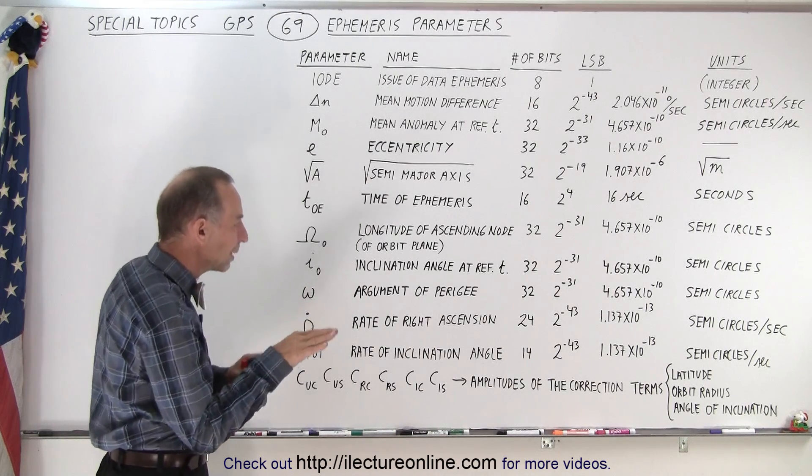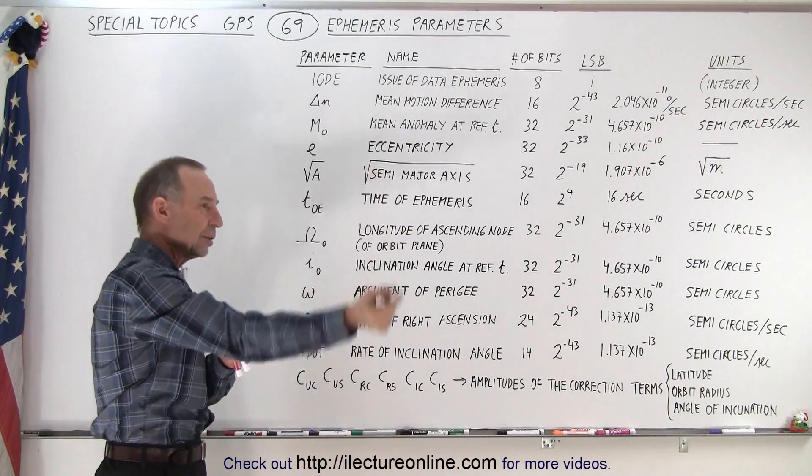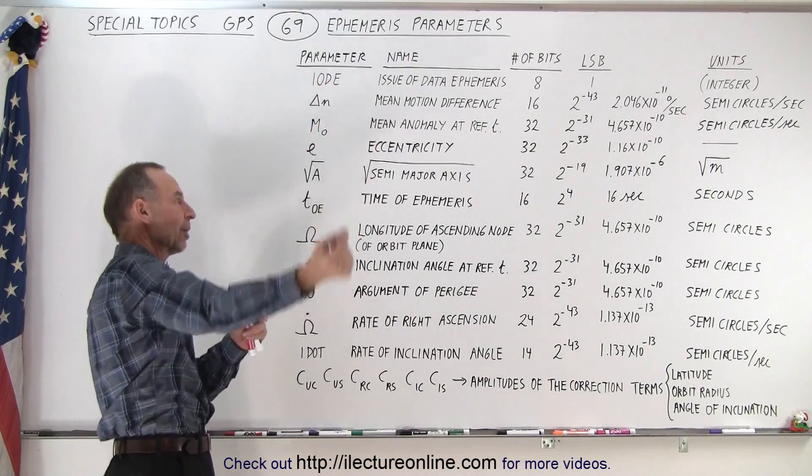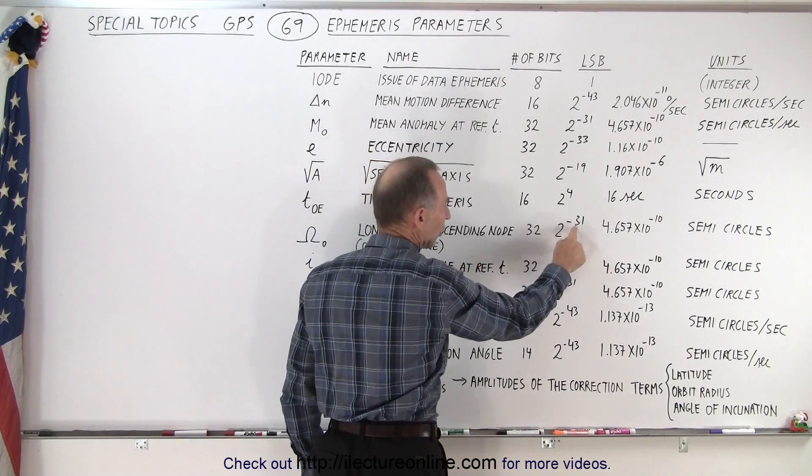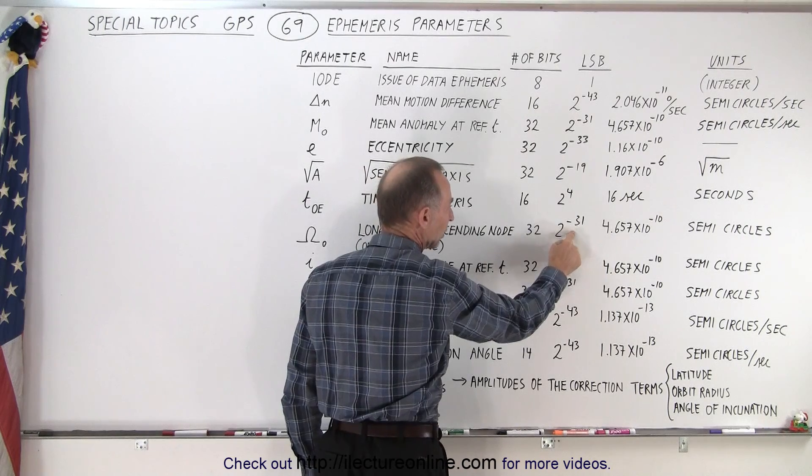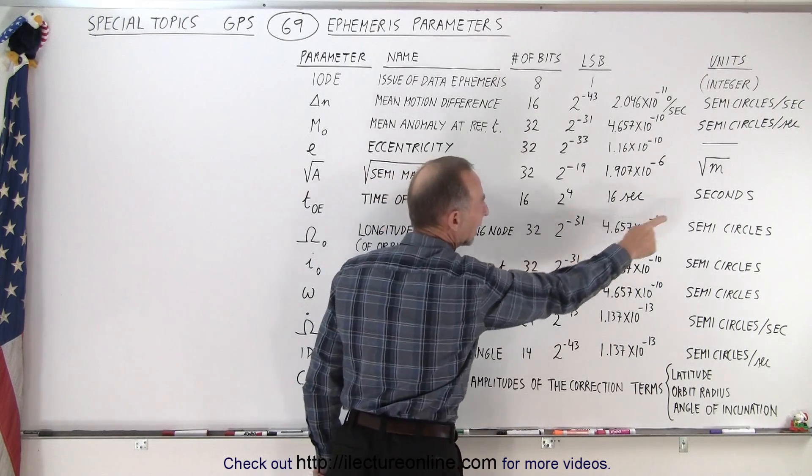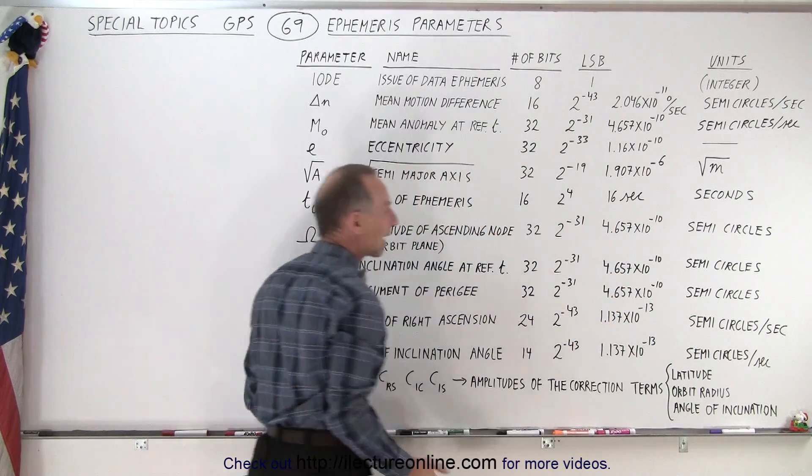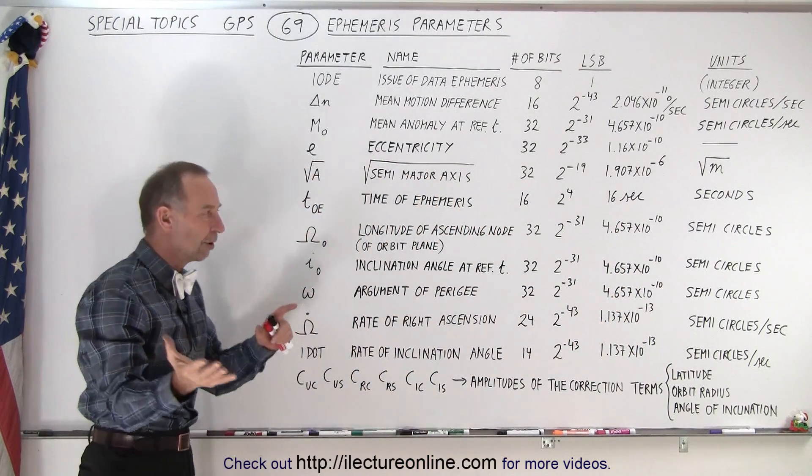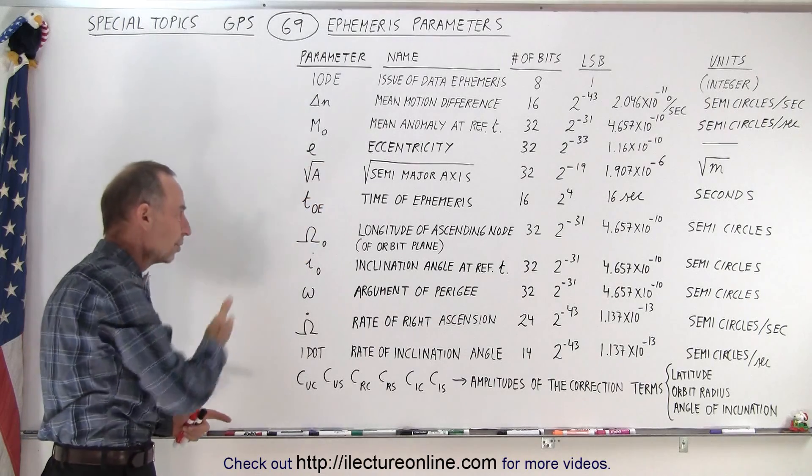So that would be the location where we have the ascending node, where the satellite comes across that plane. We need to be able to keep track of those small changes. LSB 2 to the minus 31, we have 32 bits there. And again, it's in terms of semicircle. You see the same unit popping up all the time when we're trying to make adjustments for a particular orbit parameter.